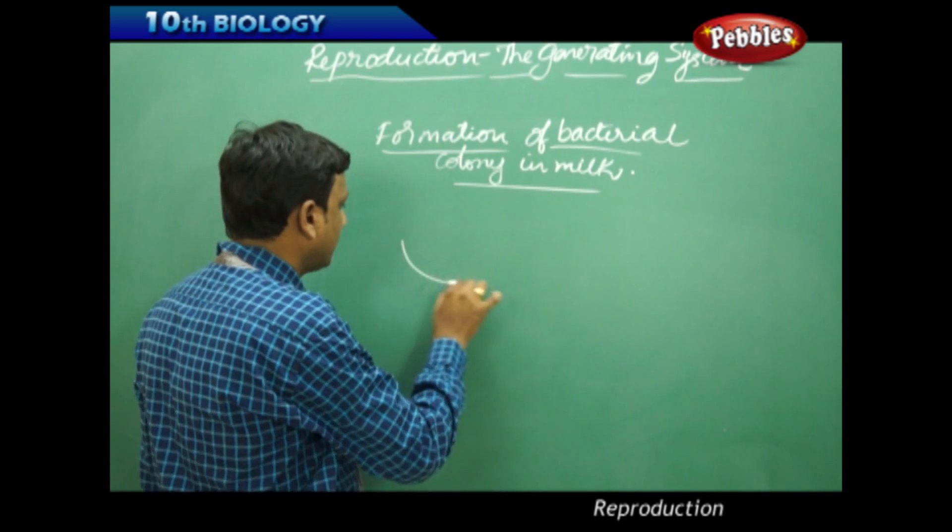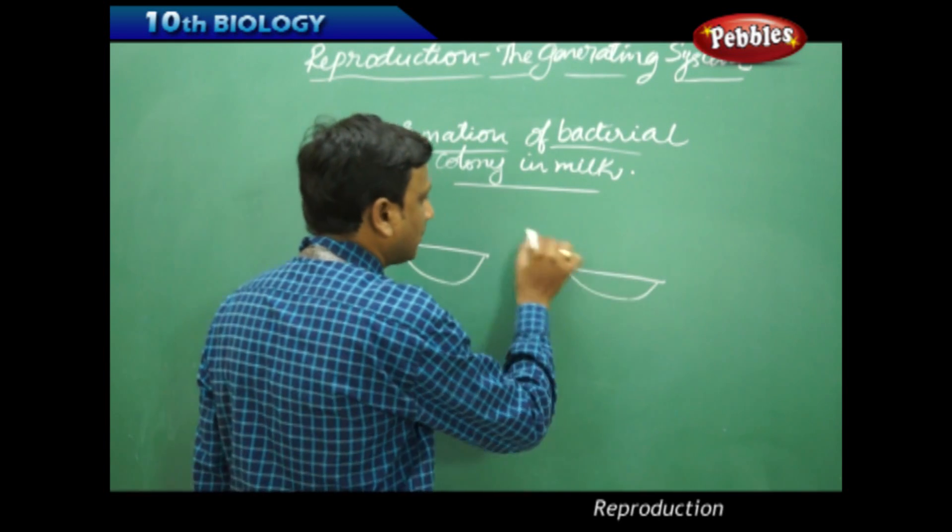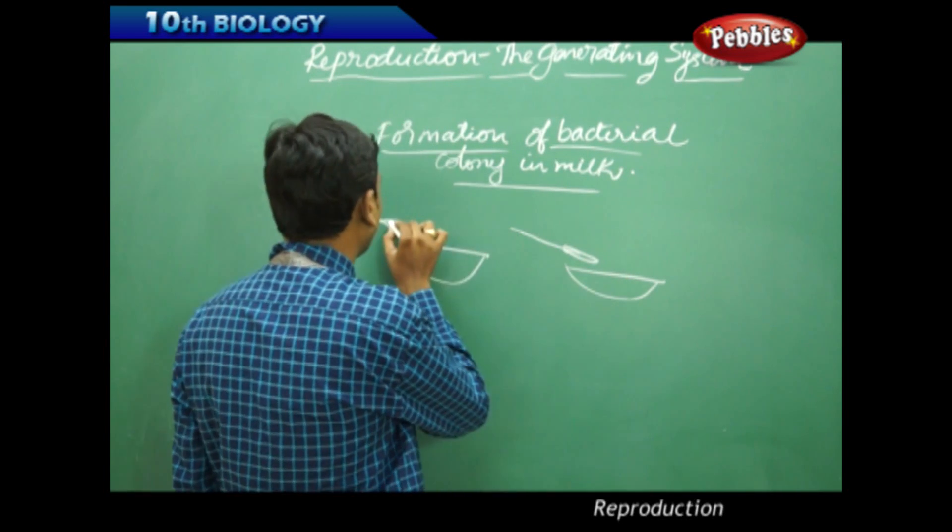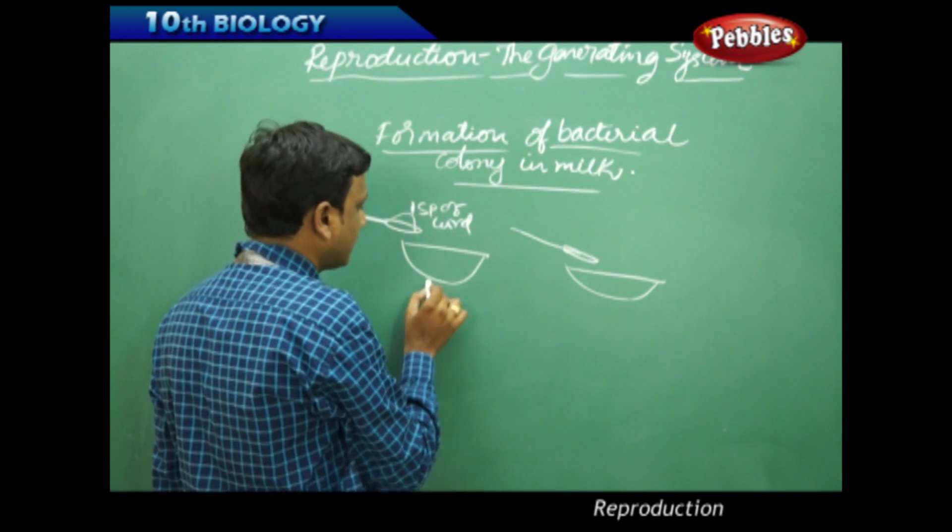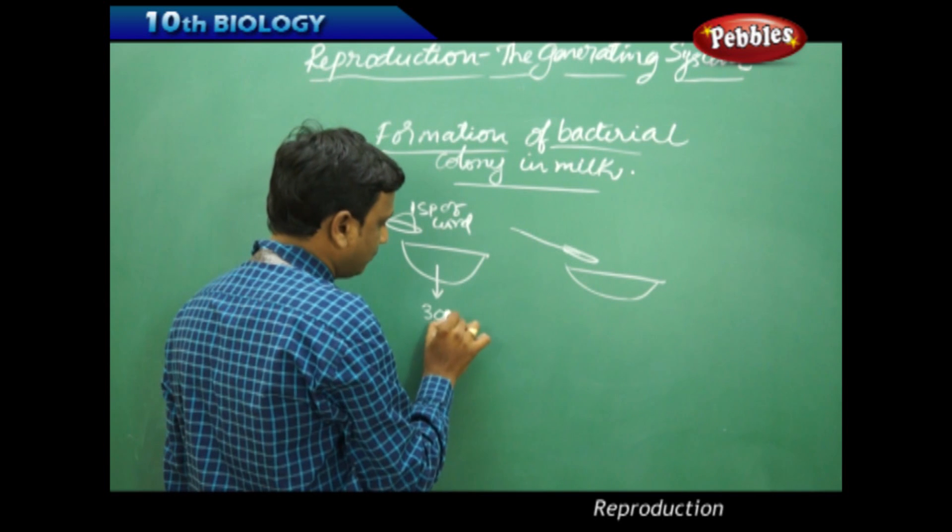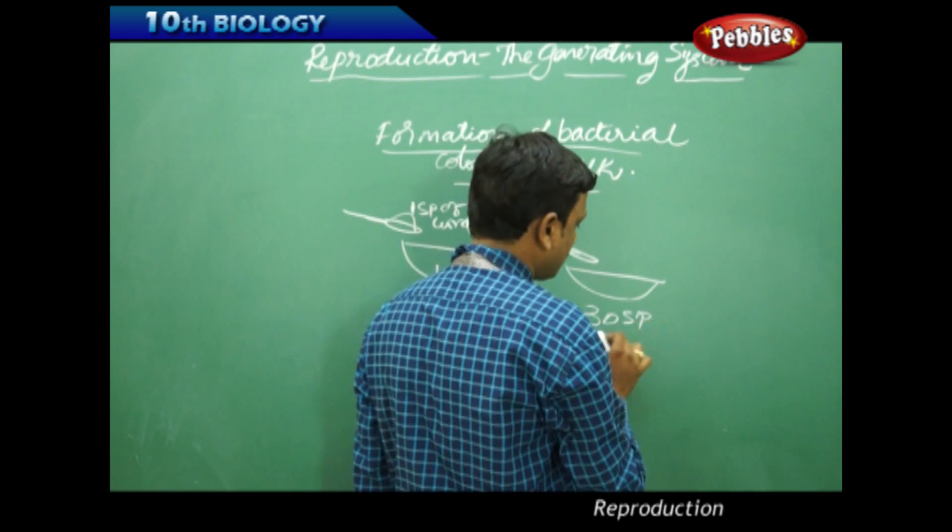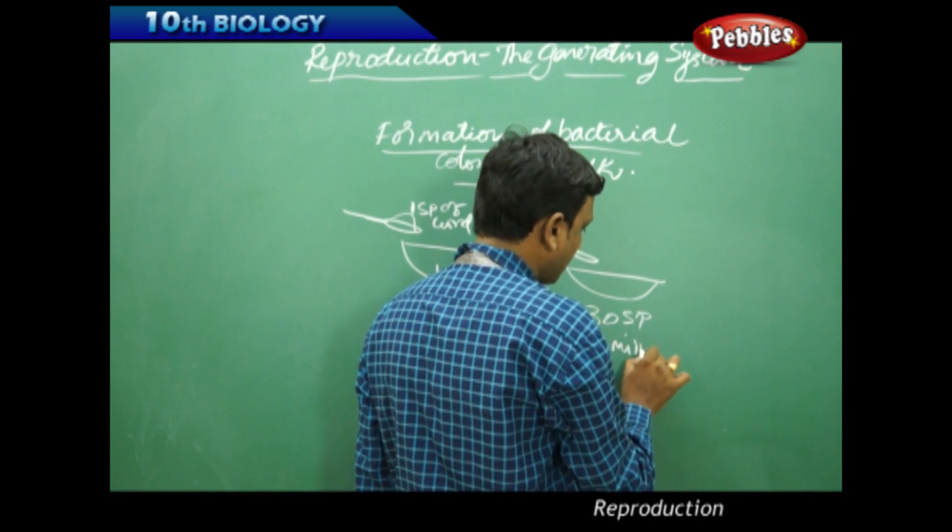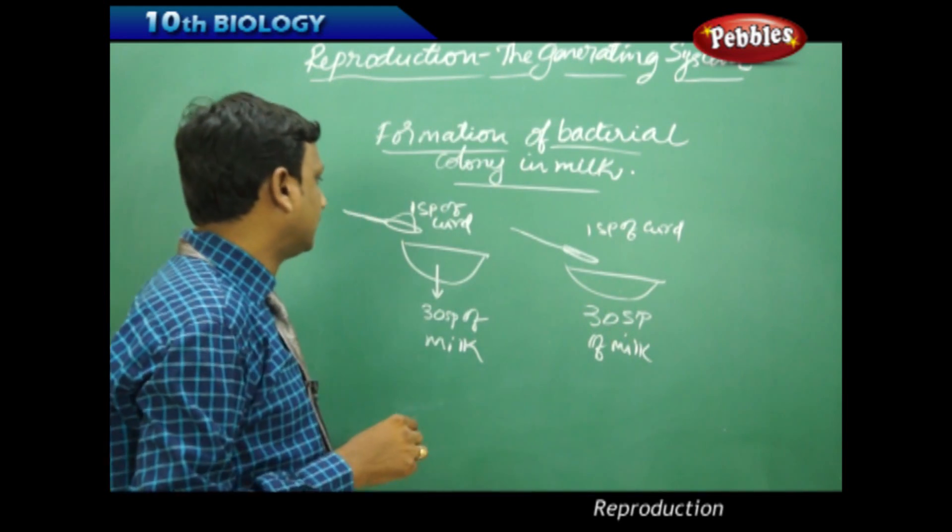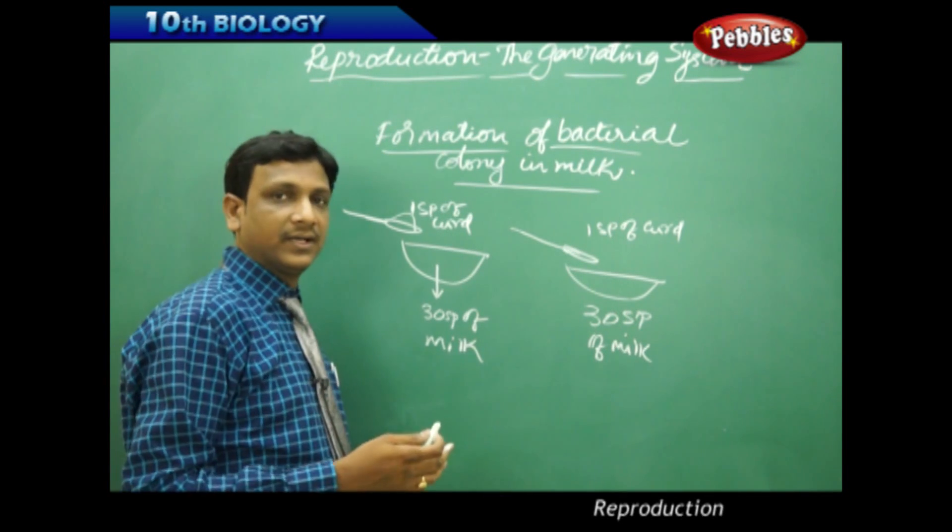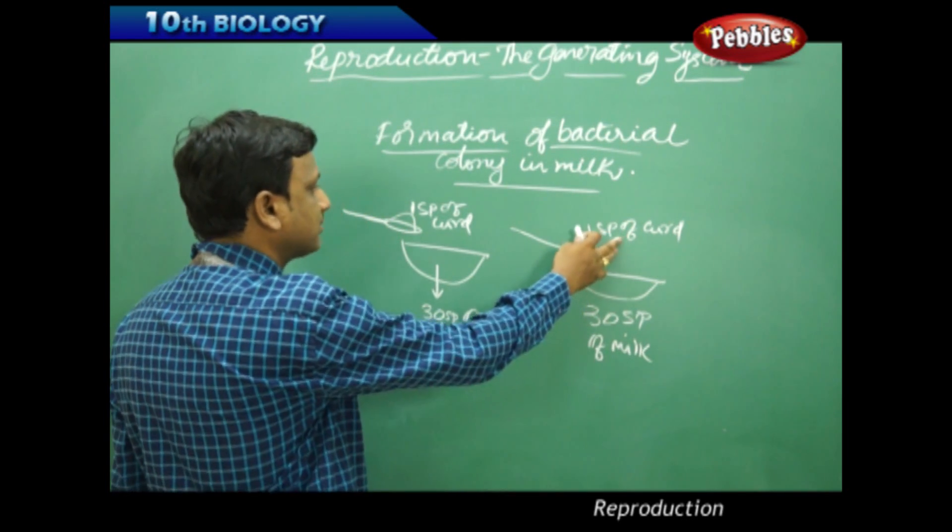Here we are taking two bowls. We are taking one spoon of curd and 30 spoons of milk in this bowl. Here also, 30 spoons of milk and one spoon of curd sample being added. So it looks similar in both cases: 30 spoons of milk and one spoon of curd in each.